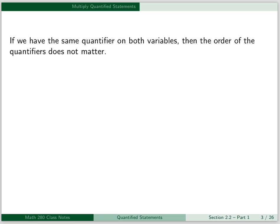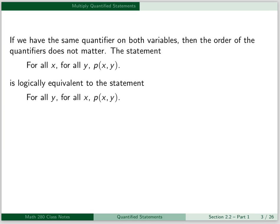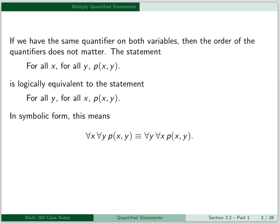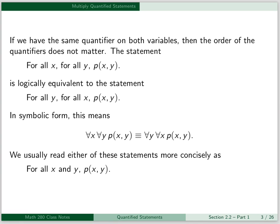If we have the same quantifier on both variables, then the order of the quantifiers doesn't matter. The statement for all x, for all y, p of x, y is logically equivalent to the statement for all y, for all x, p of x, y. In symbolic form, this means the equivalence as shown. We usually read either of these statements more concisely as: for all x and y, p of x, y.